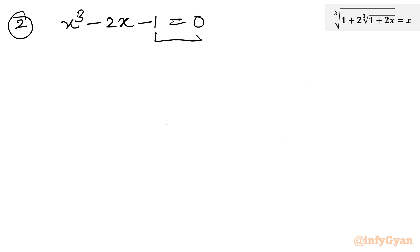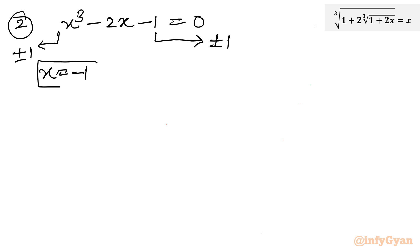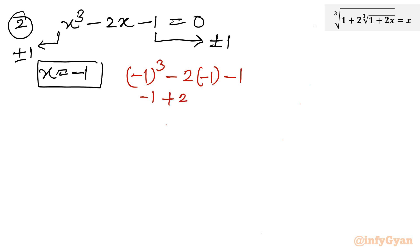Using the rational root theorem, we find the eligible factors of the constant coefficient: plus or minus 1. The leading coefficient is also plus or minus 1. I will directly test x equal to minus 1. Substituting: (minus 1) cubed minus 2(minus 1) minus 1 gives minus 1 plus 2 minus 1, which equals 0. So x equal to minus 1 is confirmed as a root.